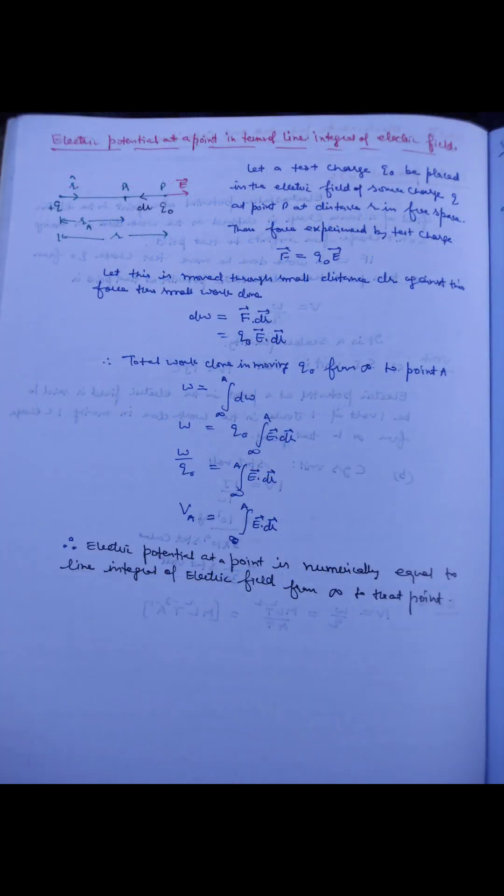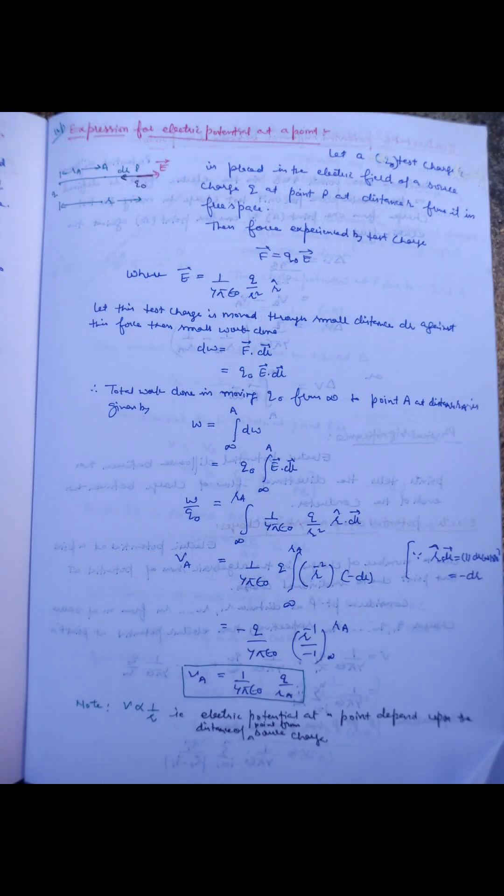When we find the force on the test charge in the external electric field and then find the work done in moving the test charge through a small distance, it is found that the potential at a point is equal to the line integral of the electric field.